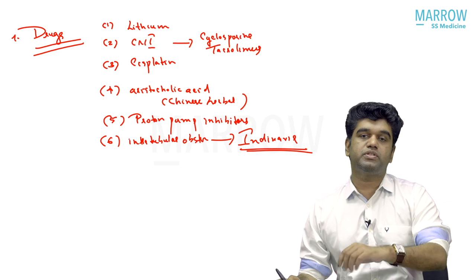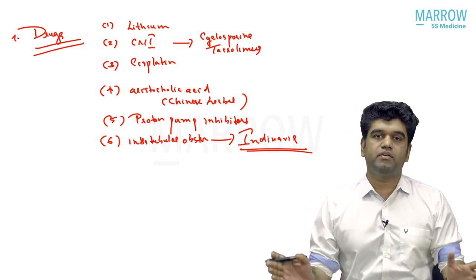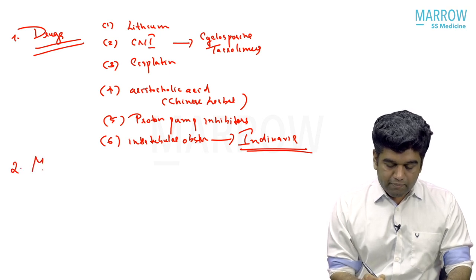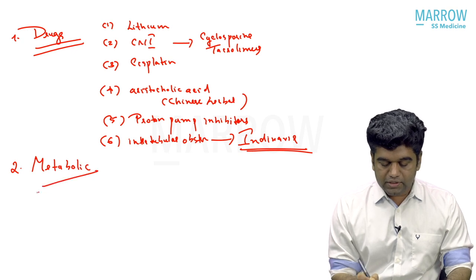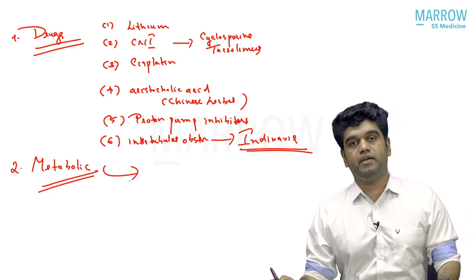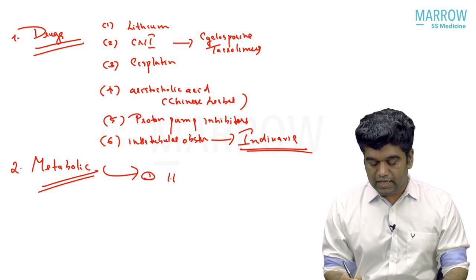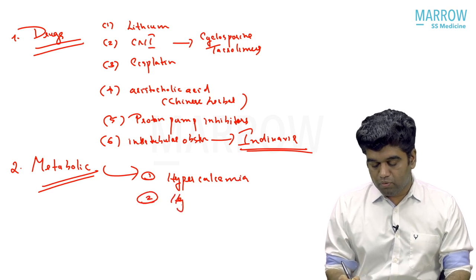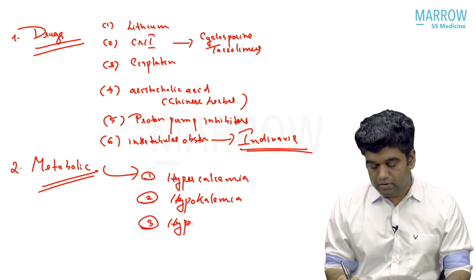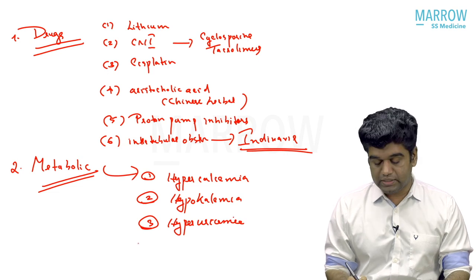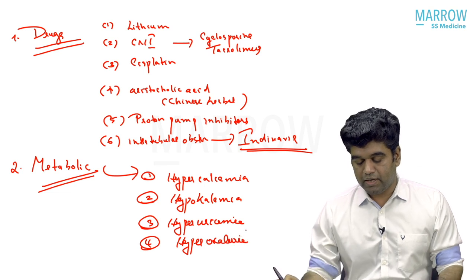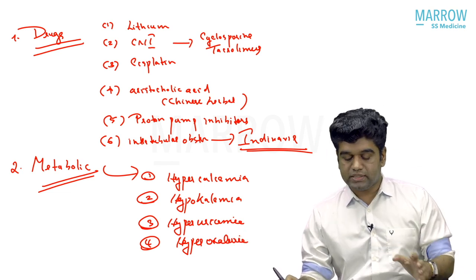So lithium, calcineurin inhibitors, cisplatin, aristolochic acid, PPI, and indinavir are all important drugs that can produce CTID. Next, metabolic conditions producing CTID: four very important ones. One is hypercalcemia — prolonged hypercalcemia can produce CTID. Two is hypokalemia — prolonged hypokalemia can produce CTID. Three is hyperuricemia — high uric acid levels over a long time can produce CTID. Four is hyperoxaluria — oxalate stones and obstruction leading to CTID.